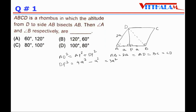Now let us find BD by applying the Pythagorean theorem for triangle DPB. BD² = PB² + DP² = a² + 3a² = 4a², therefore BD = 2a. So we have AB = 2a, AD = 2a, and BD = 2a.